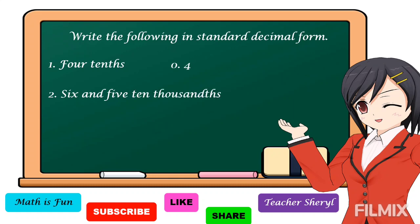Another example: six and five ten-thousandths. Here we have the word 'and,' so we have a whole number which is six, followed by the decimal point. Then we write five ten-thousandths. Ten-thousandths means we have four digits to the right of the decimal point, but we have only one digit which is five. So, we write three zeros before five. We read this number as six and five ten-thousandths, written as 6.0005.